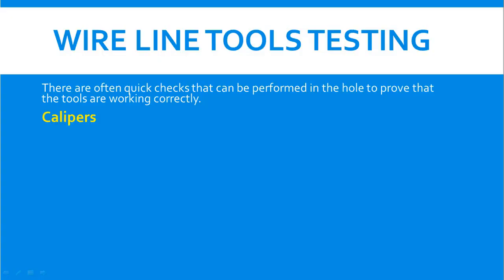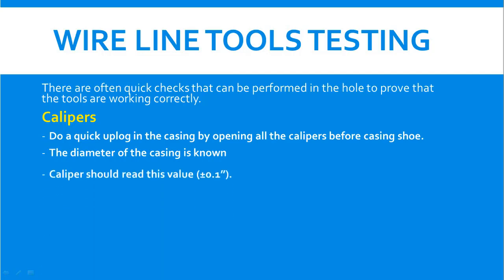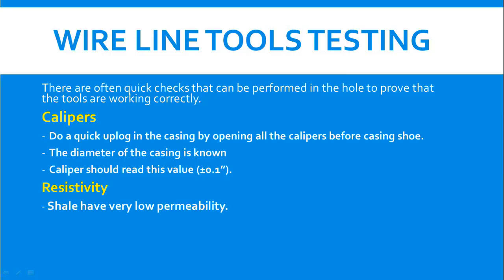For example, a quick check for calipers: do a quick uplog inside the casing by opening all the calipers before the casing shoe. We know the diameter of the casing, so while logging up with the caliper inside the casing, the caliper should read the casing ID within plus or minus 0.1 inches.